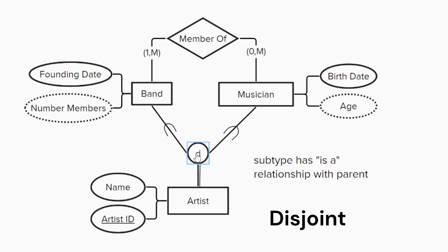In fact, an artist must be one of these two options, which is why there is a double line from artist to the Specialization Circle to indicate total participation in the specialization. It is not possible to have an artist that is neither of these two options.